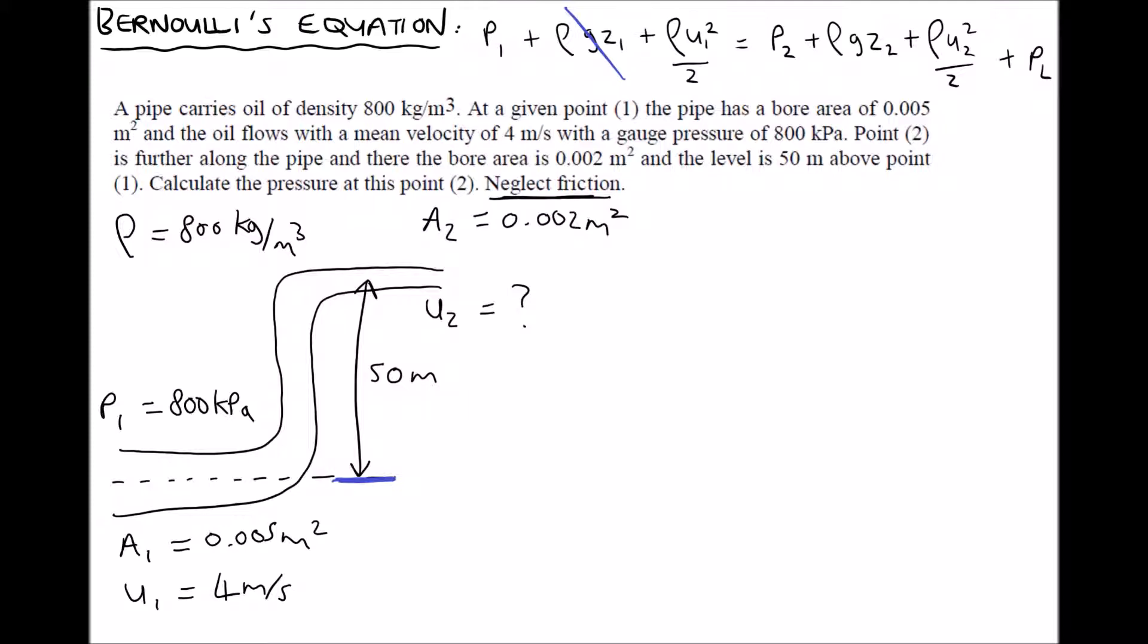We then have rho U1 squared over 2, and we have a value given for U1. Moving to the right-hand side, the question wants us to calculate P2. So we need to keep that term in. We have rho GZ2. Well, we have an elevation at position 2 relative to position 1. So we need to leave that term in. It does tell us that we can neglect losses, so we'll lose PL.